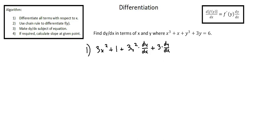Notice that in the third and fourth terms on the left side of the equation, which are both y functions, we've differentiated and multiplied by dy over dx when differentiating with respect to x. The right side of the equation equals 6, which is a constant, so its derivative is 0. We've now completed step 1 of the algorithm, and for the two y functions, we've also completed step 2.